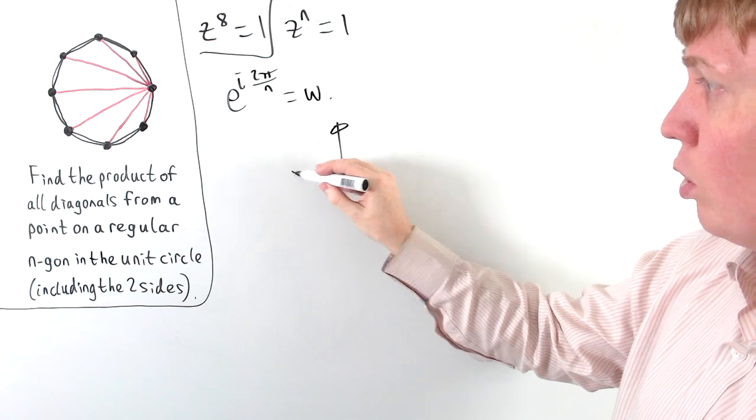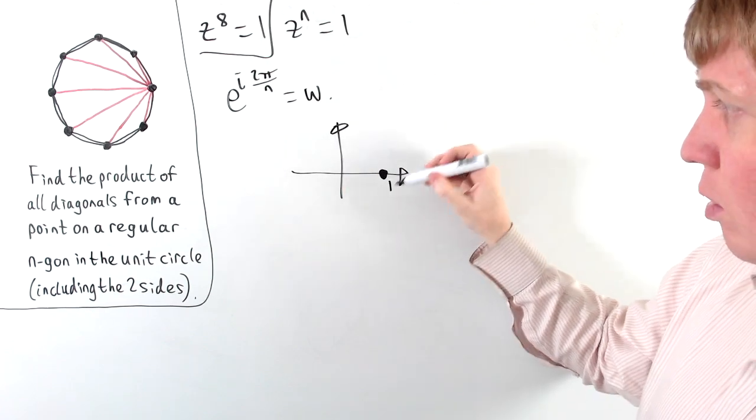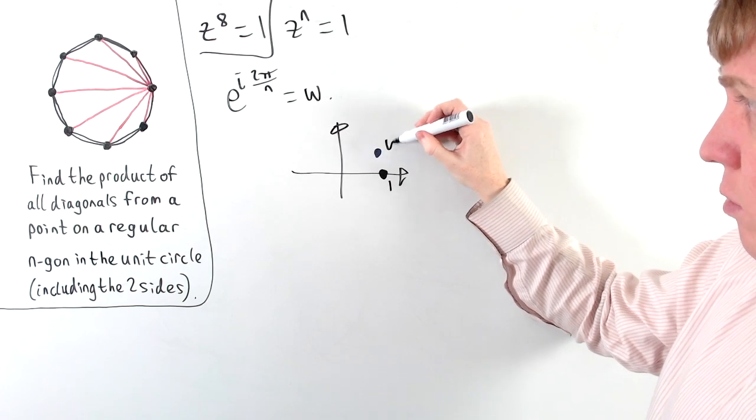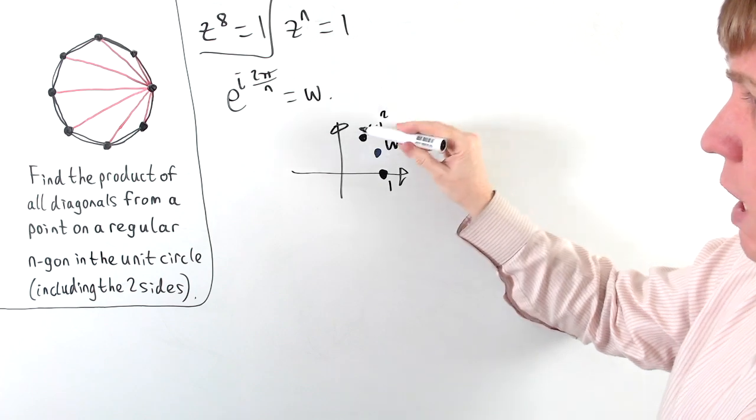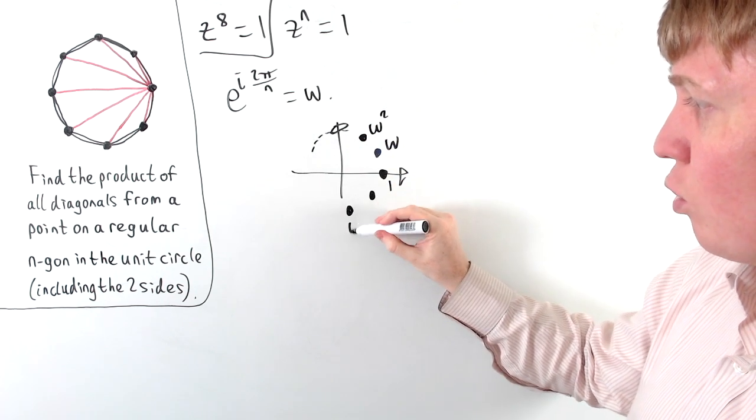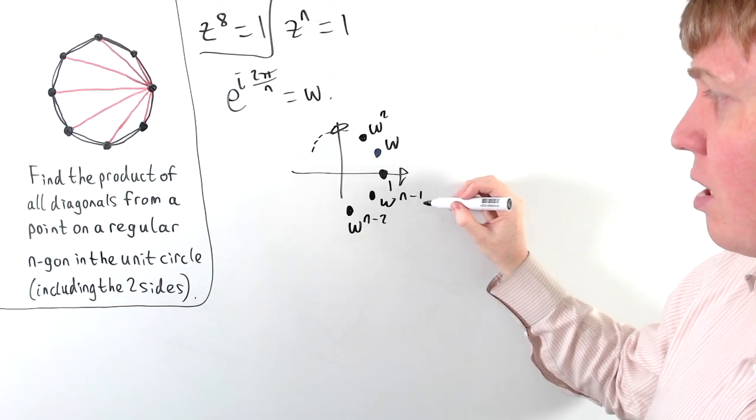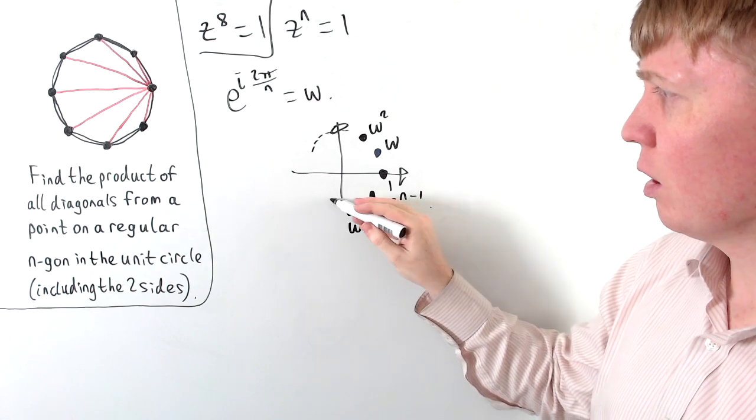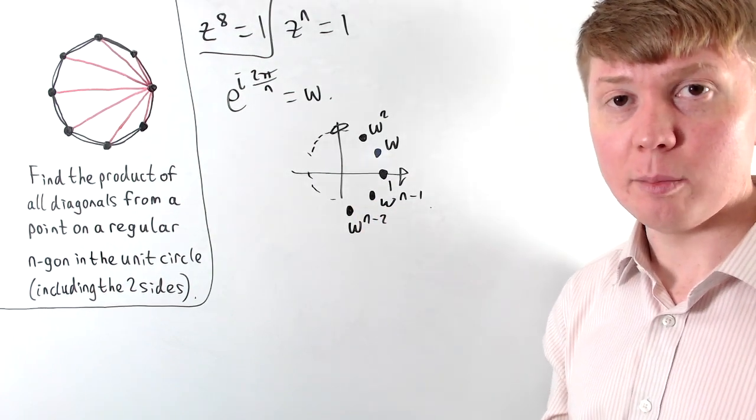Then we can start to picture what all of these roots look like. So we get our first root would actually just be z equals 1, then we'd go around to omega here, but then the next one would be omega squared, and we'd carry on all the way around like this until eventually we get to omega to the n minus 2, and finally omega to the n minus 1 here. So we've got all of our roots of unity form an n-sided regular polygon.